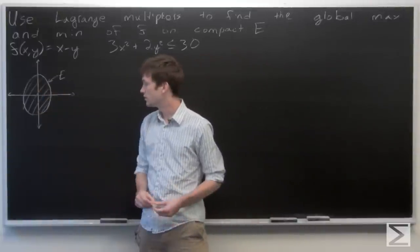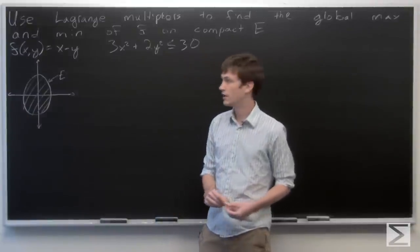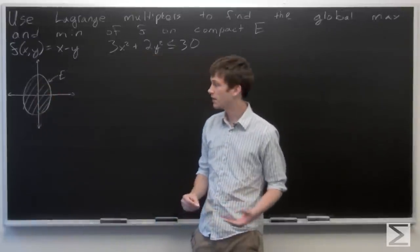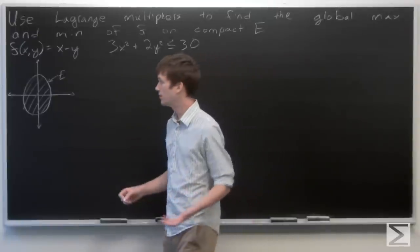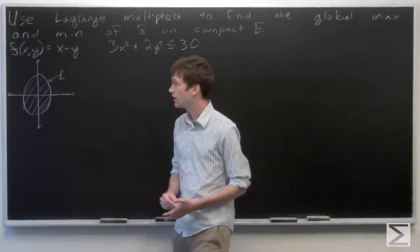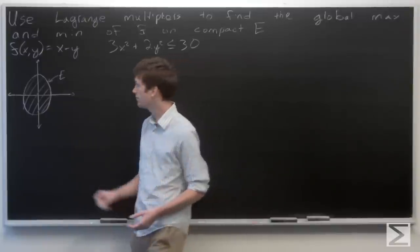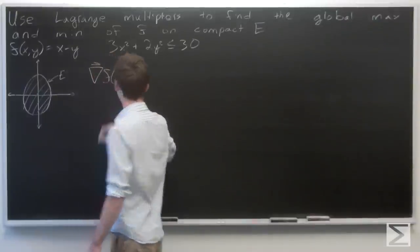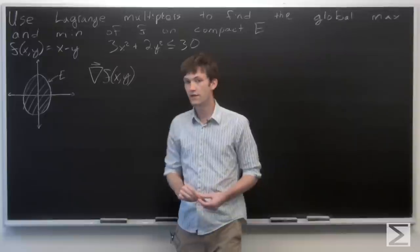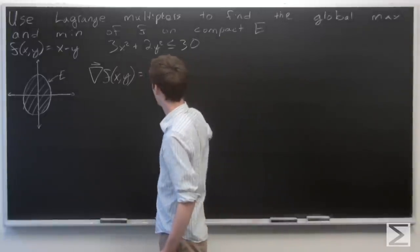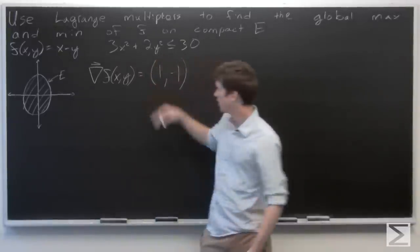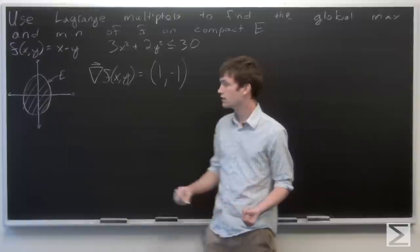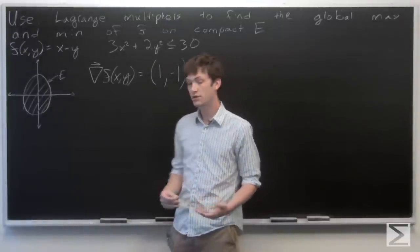First, we want to see if there are any critical points of f that lie within the interior of our compact region E. We'll do that in the normal way by finding the critical points of f and seeing if any lie in our region. Our gradient vector of f equals (1, -1), which is never zero, so we know there are no interior critical points.